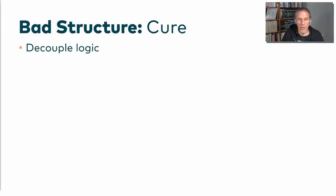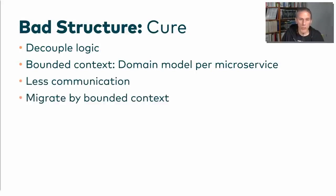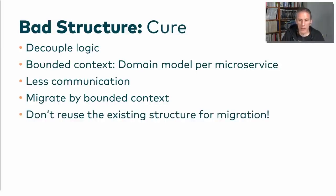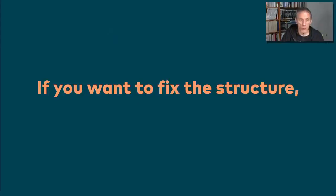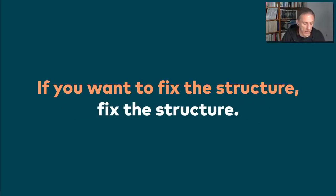The cure is to decouple logic — and the solution I propose is domain-driven design and bounded contexts, where you have loosely coupled domain models in each microservice. You'll have less communication, and you can use a migration approach that moves one bounded context at a time. Don't reuse an existing bad structure for migration, because migrating that into microservices makes it even worse. If you want to fix the structure, fix the architecture — don't just migrate the whole thing to microservices.